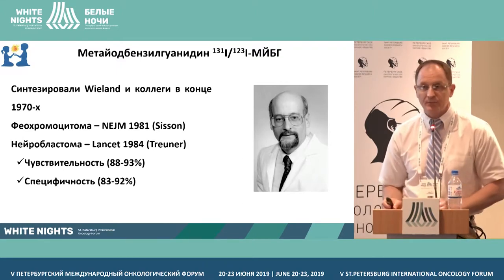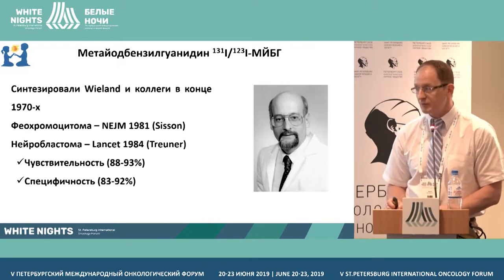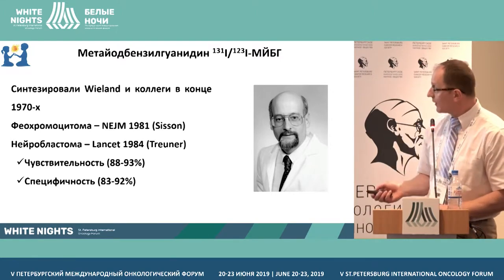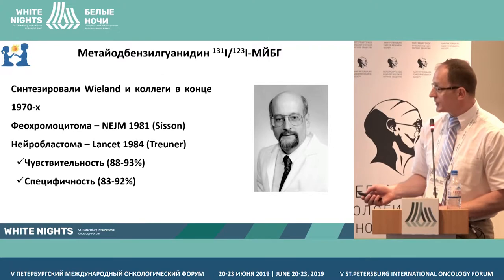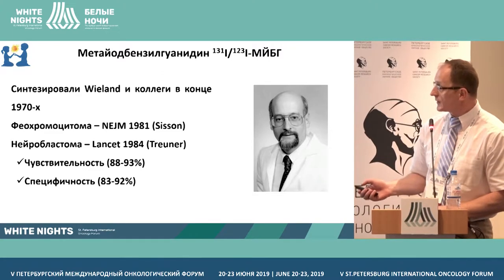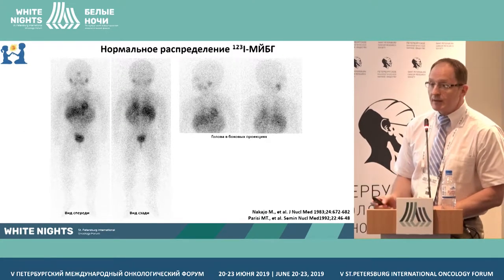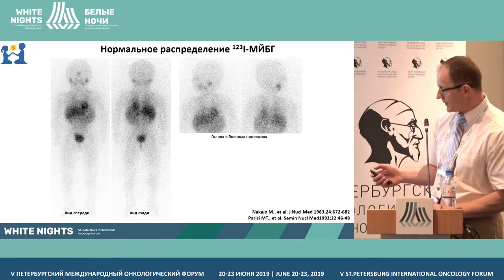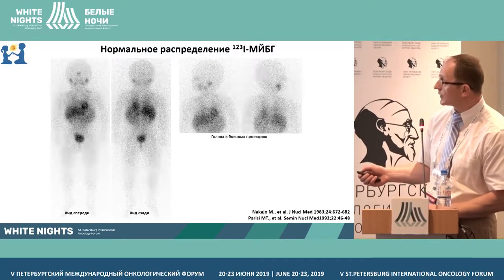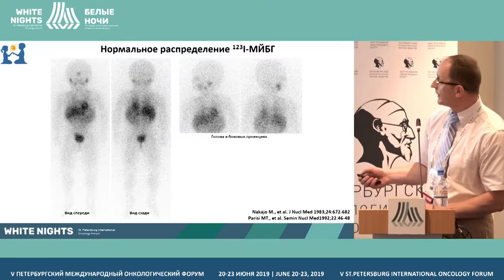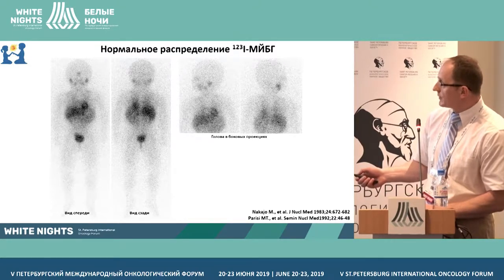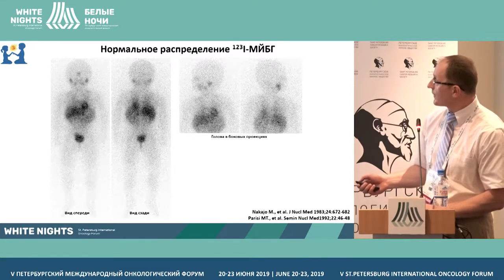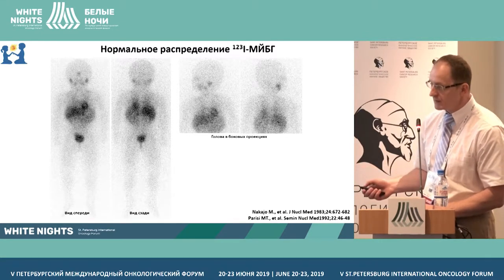MIBG was synthesized at the end of the 1970s by Weil and Dadal, and in 1984 neuroblastoma was visualized for the first time with high sensitivity and specificity. That's how the normal physiological distribution of the radiopharmaceutical looks like. It is being accumulated in the pericardium and in the mucosa.